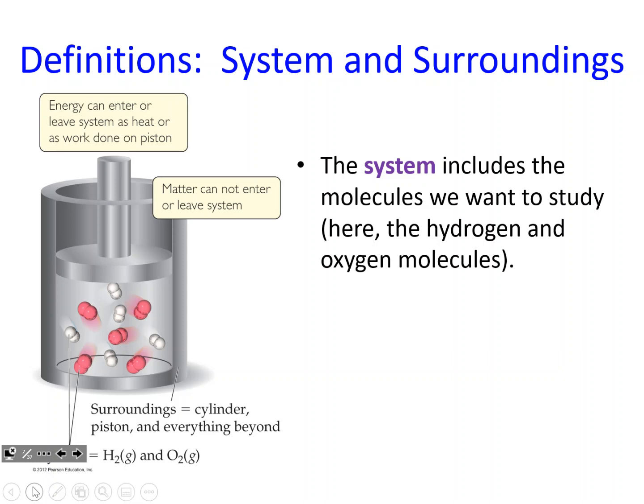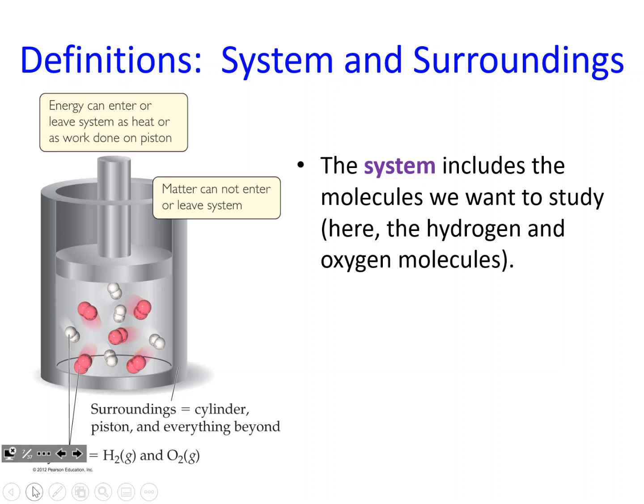The system includes the molecules we want to study. The surroundings are everything else around it. In this diagram, we have a piston holding gas particles — oxygen and hydrogen — inside. The system is really just the oxygen and hydrogen; the piston, the container, and everything outside is classified as the surroundings.